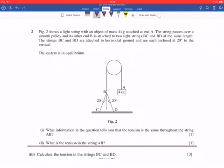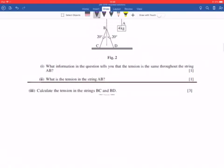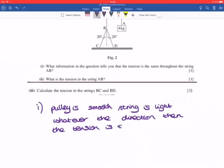What information in the question tells you the tension is the same throughout the string A and B? So, part one, you'd say, well, it says the pulley is smooth, so there's no friction. And the string is light. Because then we don't have to worry about the weight in that. So whatever the direction, the tension is going to be the same in both strings.